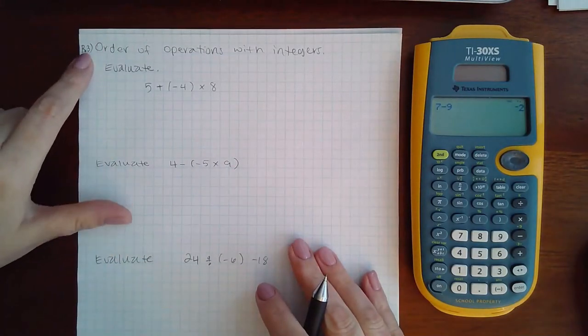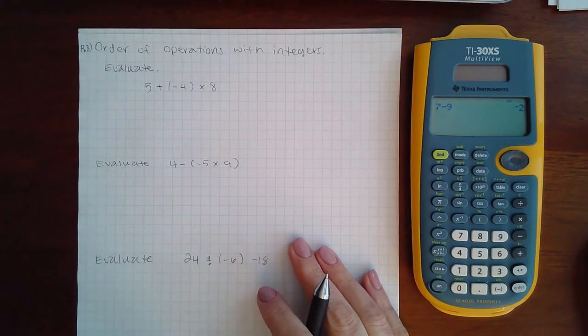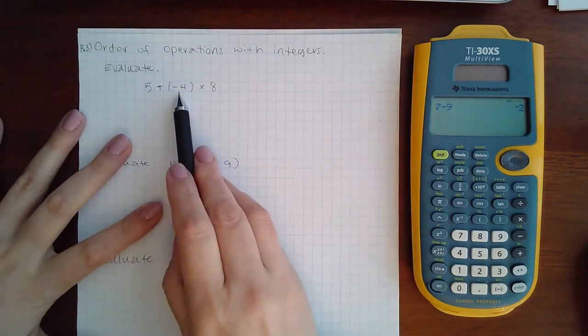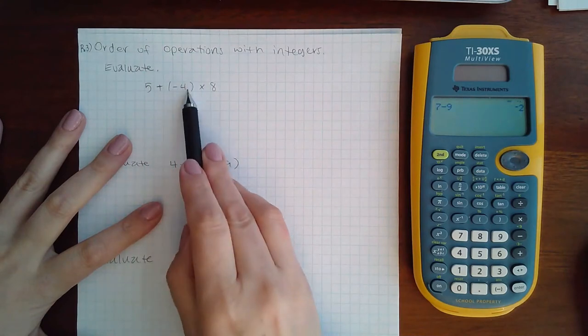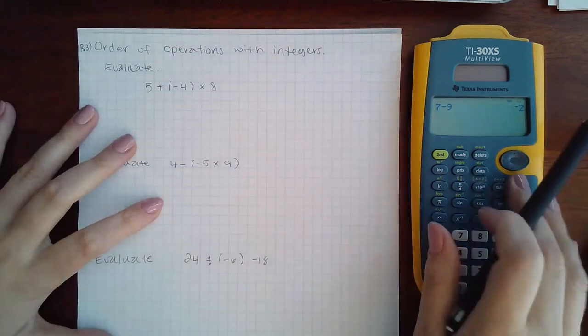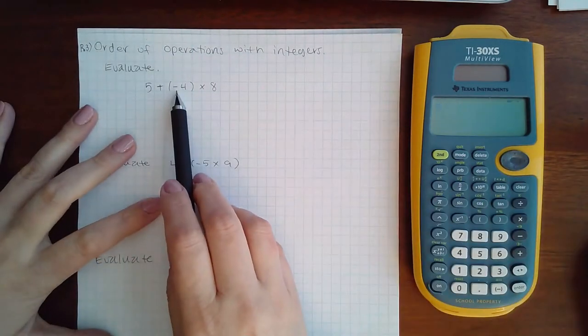Here is our 0.3 order of operations with integers. We follow the same order of operations. This parentheses is not considered a group because there's nothing to do inside. So we move on to evaluating.